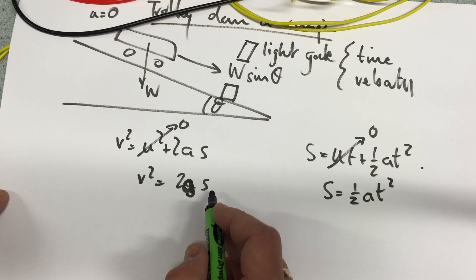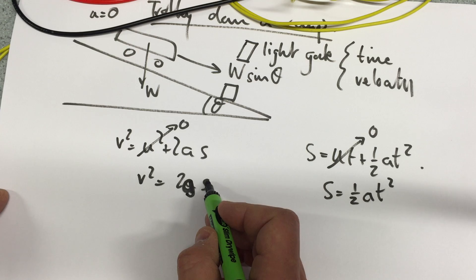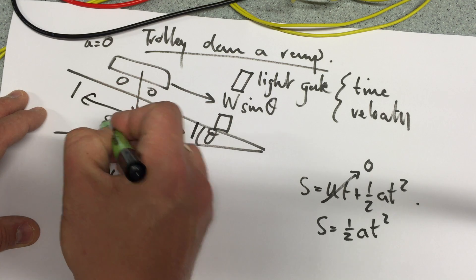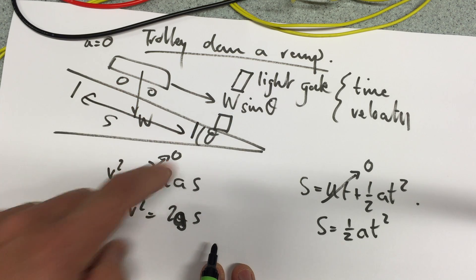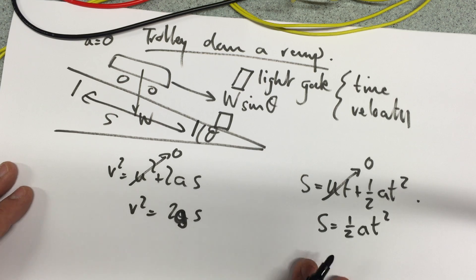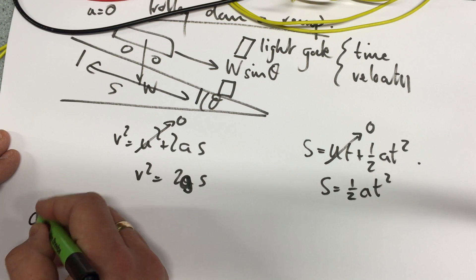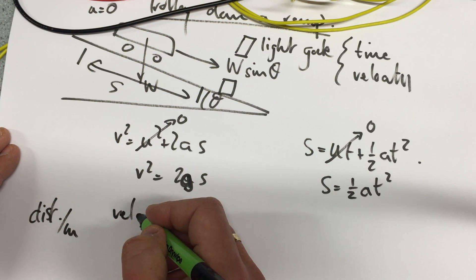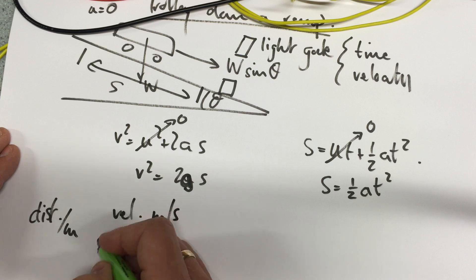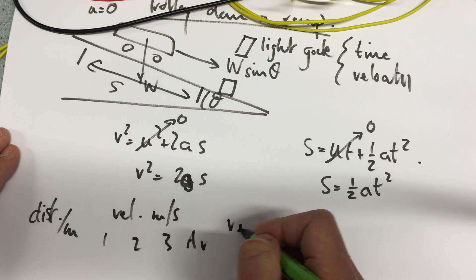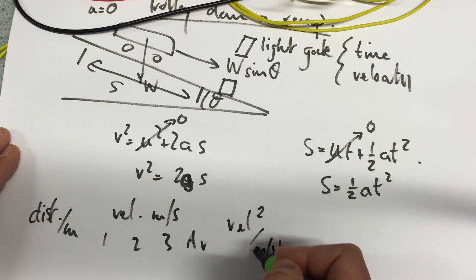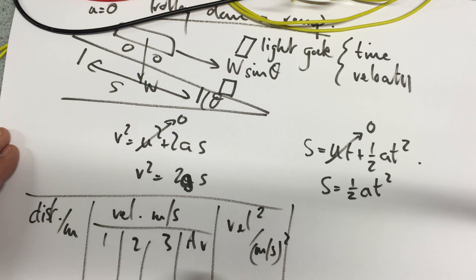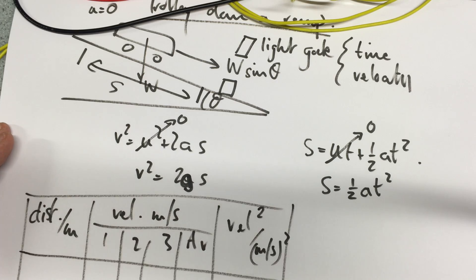So we've got two ways of doing this. Of course this will be my independent variable. I'm changing the length of how long it drops down the slope and I'm going to measure the velocity. So if that were the case I'd want to work out the distance in meters then the velocity in meters per second once twice three times an average and then velocity squared in meters per second squared. And that would be my first table.